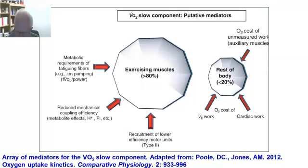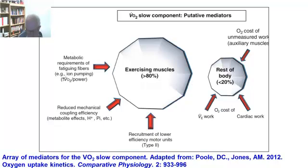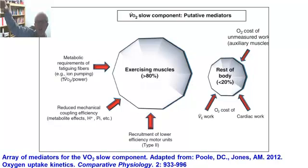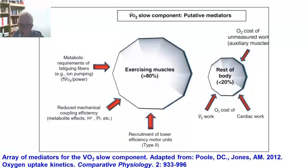This is from a really nice paper — a comparative physiology paper from Dave Paul — about the fact that the exercising muscles contribute predominantly to this VO2 slow component. There are a number of factors: lower efficient motor units (type 2s are a big contributor), fibers which are now fatiguing because the intensity has gone up, and reduced mechanical coupling efficiency. The net result includes increased hydrogen ion concentration and PCR concentration, plus around less than 20% of the contribution, which is the O2 cost associated with respiration.